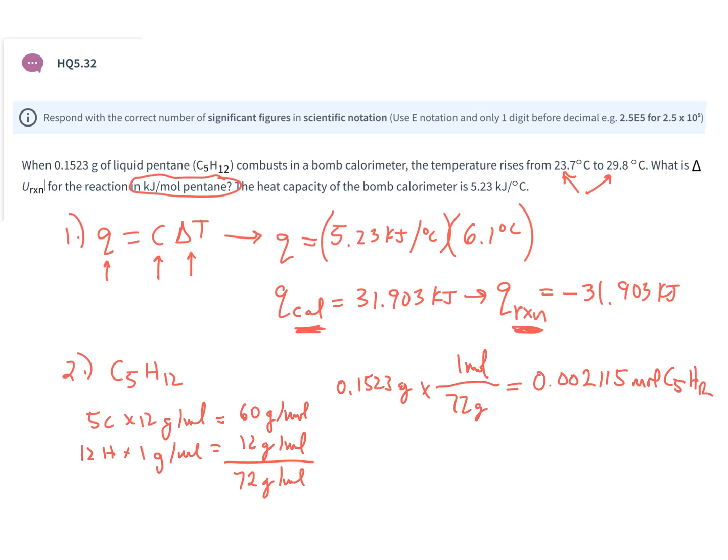Now to put this in kilojoules per mole—I've got 31.903 kilojoules. That was the amount of energy released when I burned 0.002115 moles of pentane. So I divide those two, and I should get the answer in kilojoules per mole.